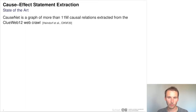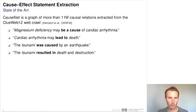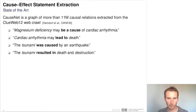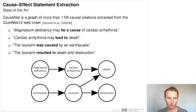The general extraction of cause-effect relations has seen a lot of interest from the research community. For example, Heindorf and I created CauseNet, a graph of 11 million cause-effect relations extracted from sentences of the ClueWeb12 web crawl, presented at CIKM 2020. They extracted phrase pairs from sentences — for example, 'magnesium deficiency' as the cause phrase and 'cardiac arrhythmia' as the effect phrase, and in another example 'cardiac arrhythmia' as cause and 'death' as effect. Using these causal phrase pairs they constructed a graph where it is also possible to extract one cause with multiple effects, such as a tsunami causing death and destruction.